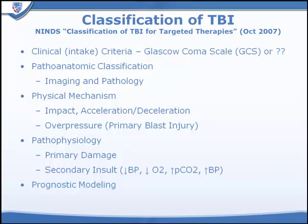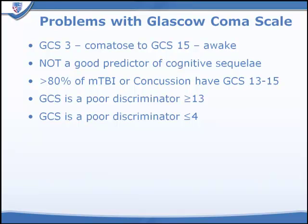In the classification of TBI, we typically use the Glasgow Coma Scale, which is a very crude predictor of patient outcome. The Glasgow Coma Scale doesn't really work well in patients who are alert and cooperative, and it is not a good way to stratify patients who fall in a range between about 13 and 15, or even as low as 6. It's a very easy test to perform and universally used, but it is not a good predictor of the ultimate outcome of traumatic brain injury.